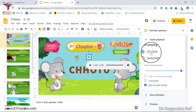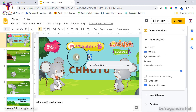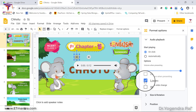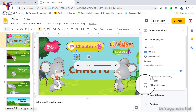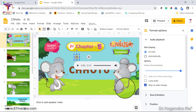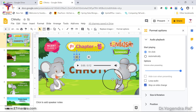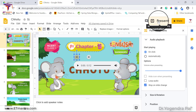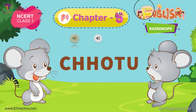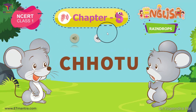Both audios are set to play on click. I need to remove the Loop Audio option and also enable Stop on Slide Change for the second audio, otherwise it will keep playing even when the slide changes. Once configured, let's present the slide.